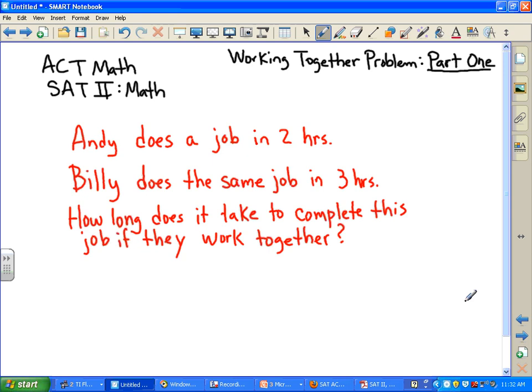In this problem, Andy does a job in two hours by himself. Billy does the same job in three hours working alone. How long does it take to complete this job if they work together?